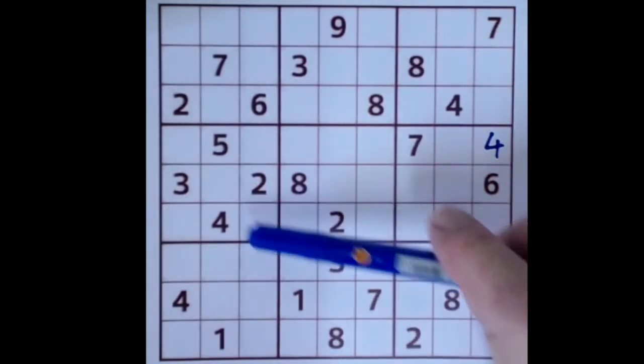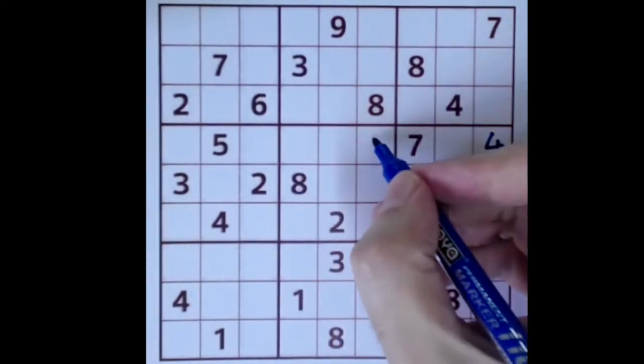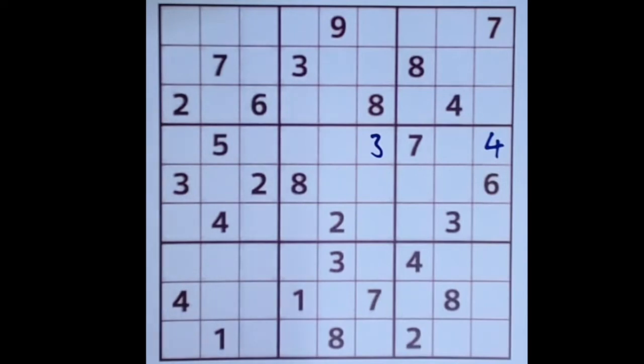Three blocking along here. Three blocking along here. Three blocking down here. Three blocking up here. Will give us a three in that square there. Two blocking along here. Two blocking along here will give us a two here. Eight blocking along in that square.